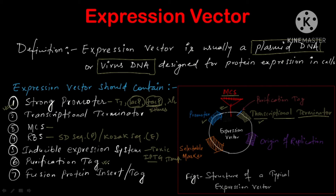Because at the end we need to purify the protein, in the vector preparation itself we need to add a purification tag so that the protein is expressed along with that purification tag. Normally we use a histidine tag — His-tag — as a purification tag, so that we can purify the protein on a nickel-NTA column. This is a very efficient method of purification of recombinant protein. A 6× histidine tag is used, meaning six histidine residues are present in the protein.